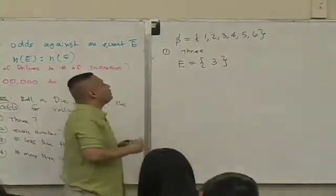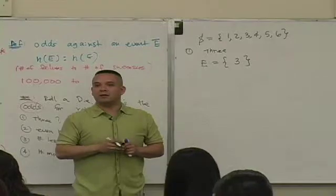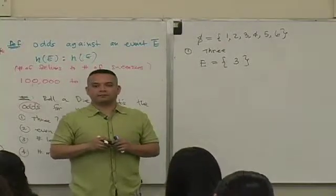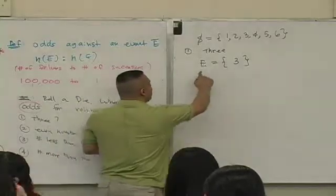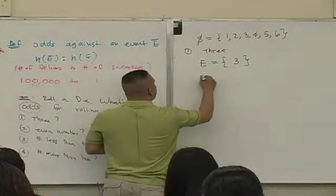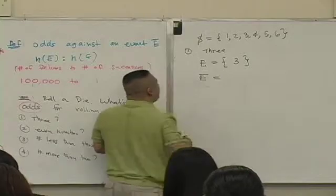This is the only outcome associated with rolling a what? Three. You okay with that? Note then, if this is E, can you tell me what's in the complement of E?